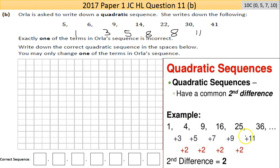There's no commonality there, but the second difference: 5 take away 3 is 2, 7 take away 5 is 2, 9 take away 7 is 2. Therefore this is a second difference of 2, so it's a common second difference.